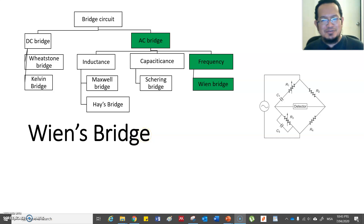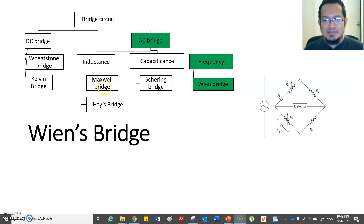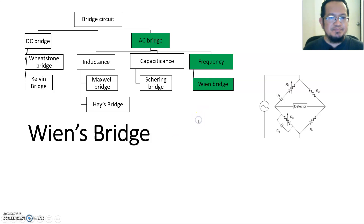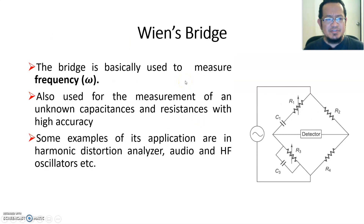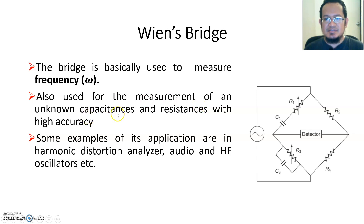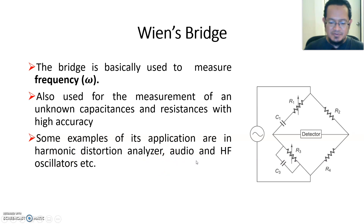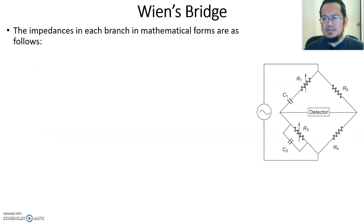Hello, assalamualaikum and good afternoon. We are going to continue with the last type of AC bridge, which is called the Wien Bridge. The Wien Bridge is basically used to measure frequency — omega, or f in terms of hertz. It is also used for measurement of unknown capacitance and resistance with high accuracy. Some application examples include harmonic distortion analyzers, audio and high frequency oscillators, and so forth.